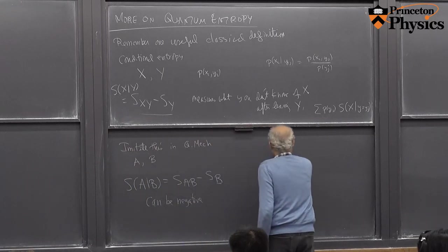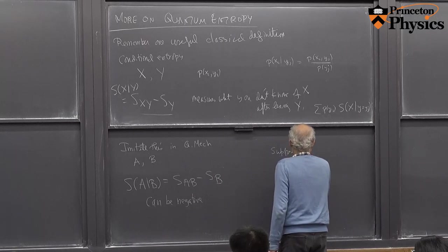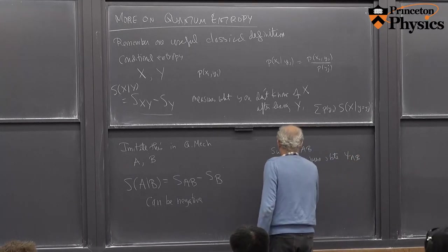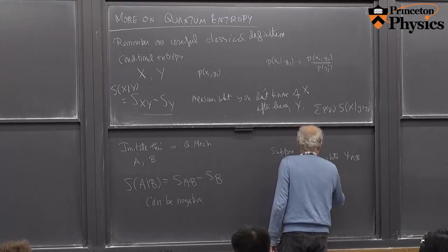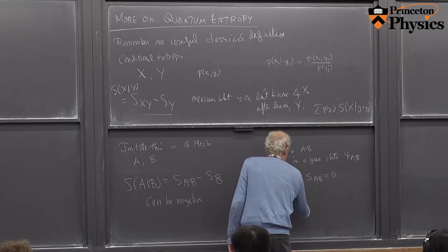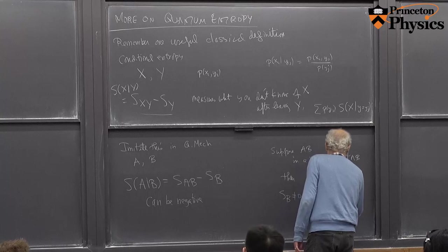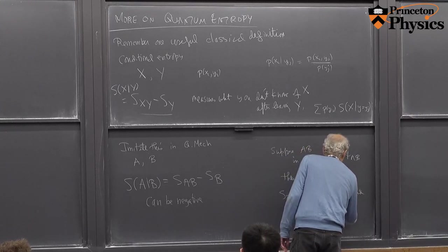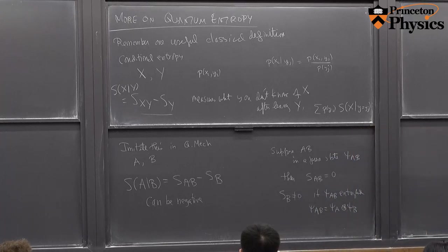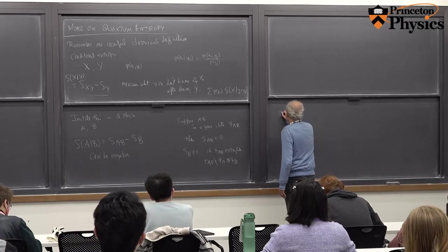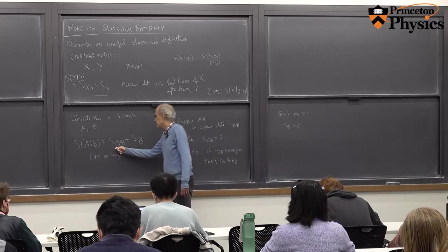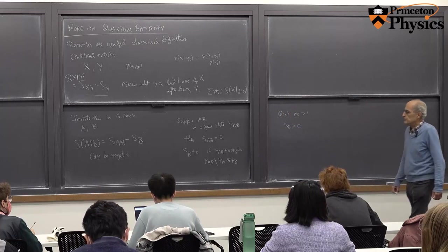To see that it can be negative, suppose AB is in a pure state |ψ_AB⟩. Then S(AB) is zero. But as long as |ψ_AB⟩ is not a simple tensor product ψ_A ⊗ ψ_B — as long as it's entangled — the density matrix ρ_B has rank bigger than one, and so S(B) is positive. This shows that S(A|B) can be negative, in contrast to the classical case.